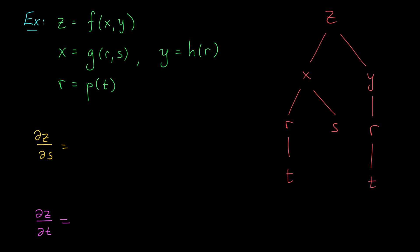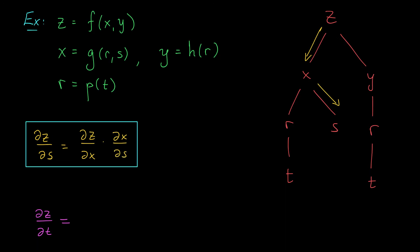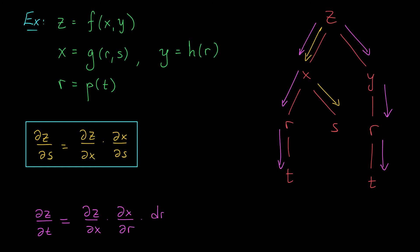In this question, we're looking for the partial derivatives of z with respect to s and t. Starting with s: we follow every branch from z to s, and I think we only have one — this branch right here. So the partial derivative is partial z by partial x times partial x by partial s. We can compute the partial with respect to t in much the same way, except now we have two branches — one on the left and one on the right. The derivative is then partial z by partial x times partial x by partial r times dr by dt — since r only depends on t — plus, from the second branch, partial z by partial y times dy by dr times dr by dt, since y only depends on the one variable.